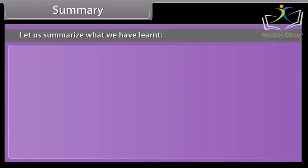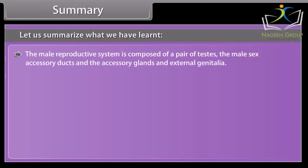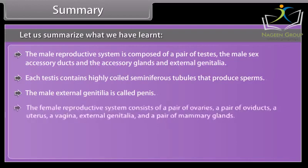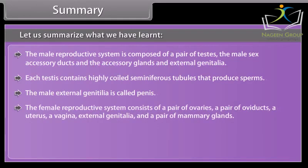The male reproductive system is composed of a pair of testes, the male sex accessory ducts, the accessory glands, and external genitalia. Each testis contains highly coiled seminiferous tubules that produce sperms. The male external genitalia is called the penis. The female reproductive system consists of a pair of ovaries, a pair of oviducts, a uterus, a vagina, external genitalia, and a pair of mammary glands.